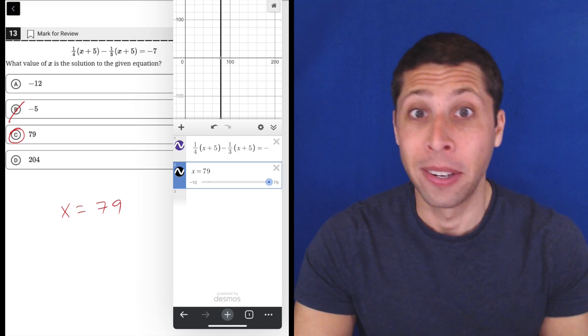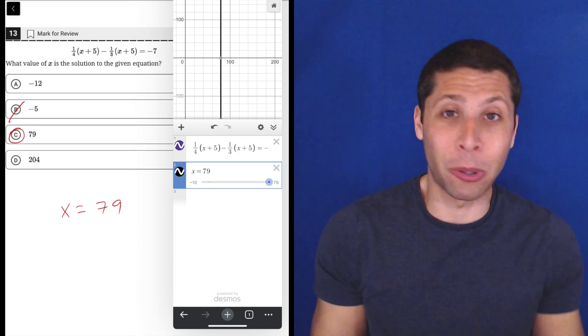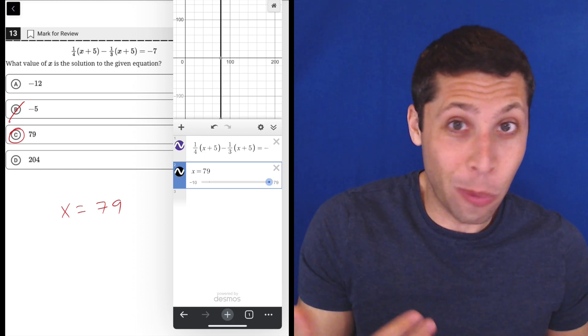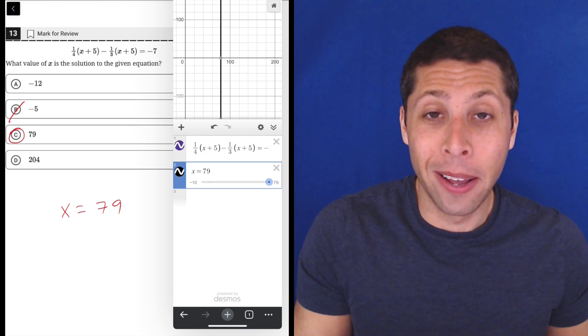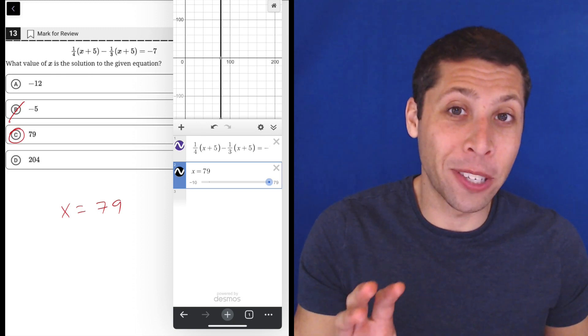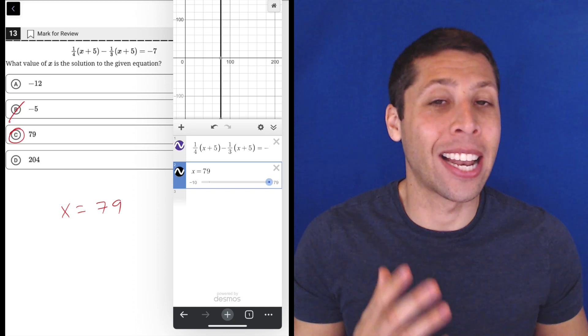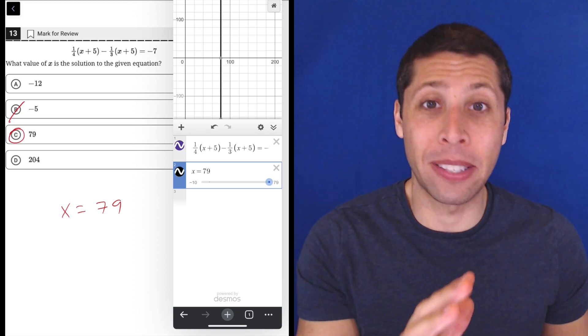That's awesome. Desmos just solves the algebra equations for you. So I think that that method there was the simplest and safest way. Maybe if you're a really good algebra, you could solve this fast. But I think the faster you go, the more likely you're going to make a mistake. And I just don't want to open the door to any mistakes at all.